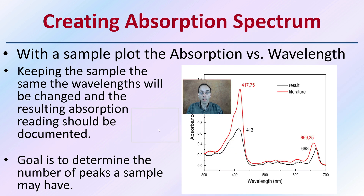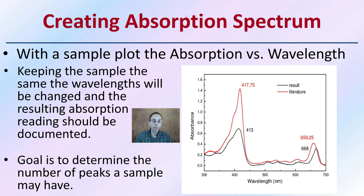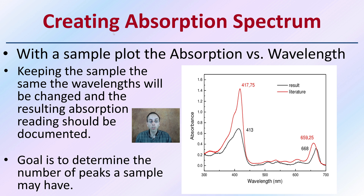When creating the absorbance spectrum, plot the absorbance versus wavelength. Keeping the sample the same, the wavelengths will be changed and the resulting absorption reading should be documented. As we change our wavelength, we're also seeing a change in absorbance, and we're documenting that. The goal is to determine the number of peaks the sample may have, which will aid in developing an idea of specifically what substance we might be dealing with.